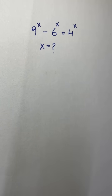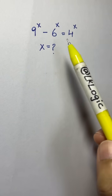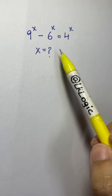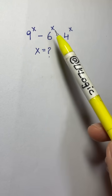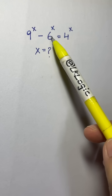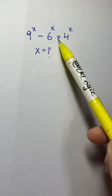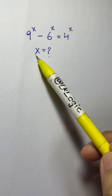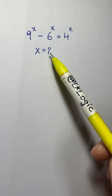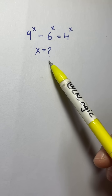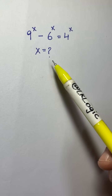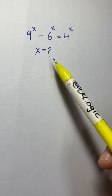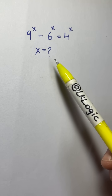Hi everyone. In this video we are going to solve a nice exponential problem: 9 to the power of x minus 6 to the power of x equals 4 to the power of x. We need to find the value of x. You can try it by yourself first and then check the answer.